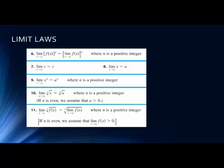If we are taking the limit of a function raised to a positive integer — 1, 2, 3, etc. — this is equal to taking the limit of the function first and then raising it to that integer. We already talked about the limit of a constant being that constant. The limit as x goes to a of just x is going to be a. And if we have the limit as x goes to a of x raised to an integer, this equals a to the nth power.